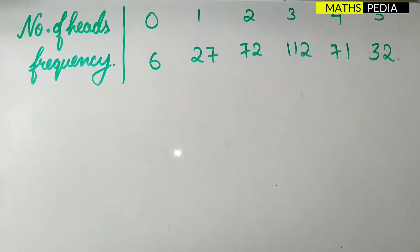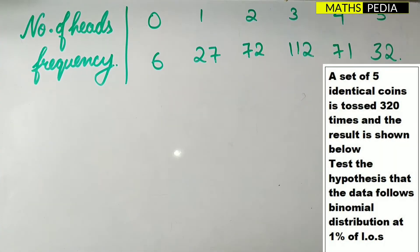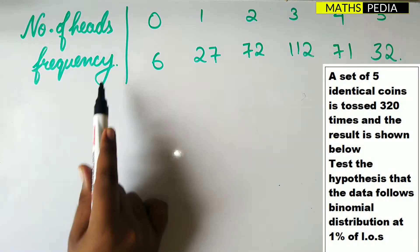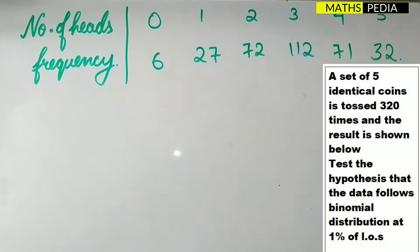In this video we are going to solve one problem on binomial distribution with respect to the chi-square test. The question is: a set of five identical coins is tossed 320 times and the result is shown in a table showing number of heads and the frequency. We have to test the hypothesis that the data follows binomial distribution at one percent level of significance.